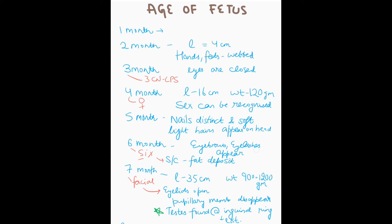At six months, eyebrows and eyelashes appear — another feature associated with females. Also at six months, subcutaneous fat deposits are seen.